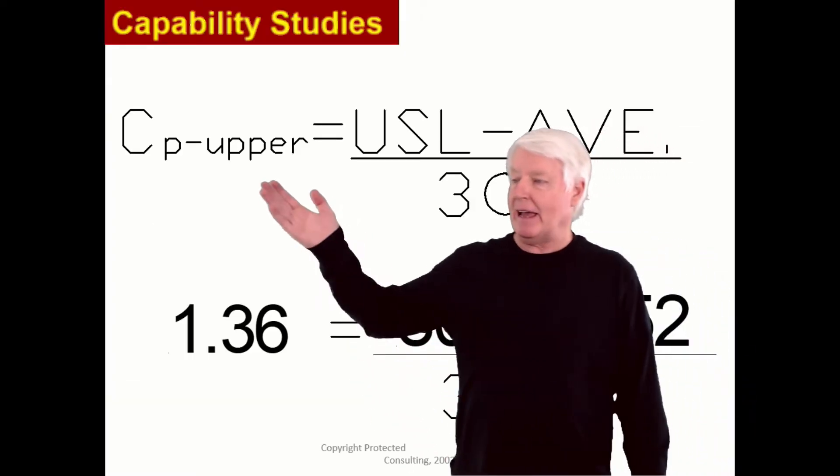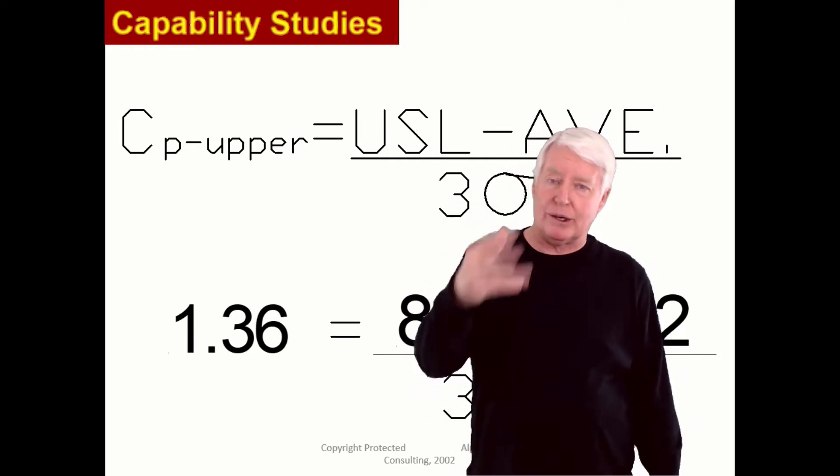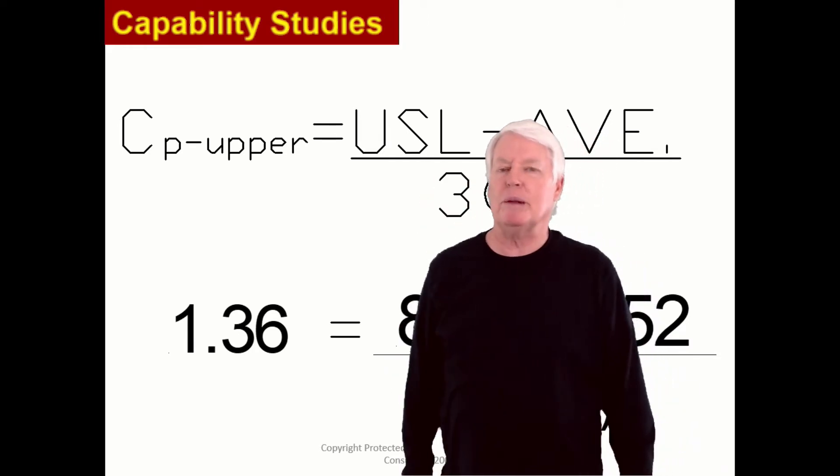In that family of CPK statistics is a CP upper, a CP lower, a CPK, and a CP. I'll explain all of those to you.